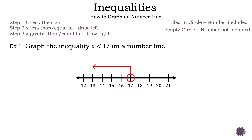Now let's check. Let's write down x less than 17. We need to pick a number to the left of 17 and a number to the right of 17. First, let's use the number 16. Is 16 less than 17? That is true. Next, let's use the number 18. Is 18 less than 17? That is not true. That is example 1.